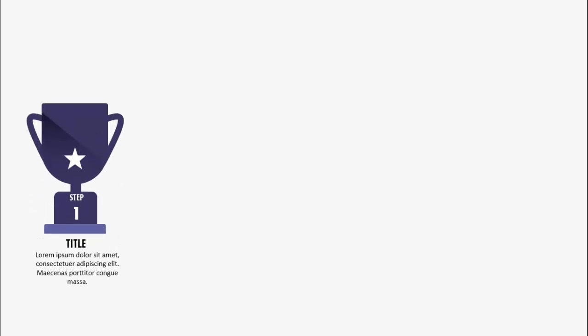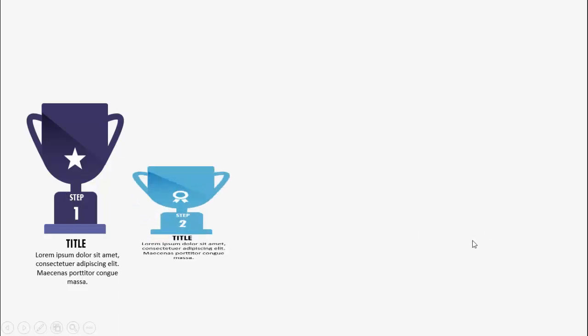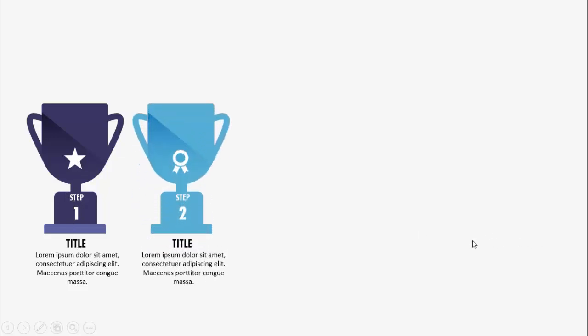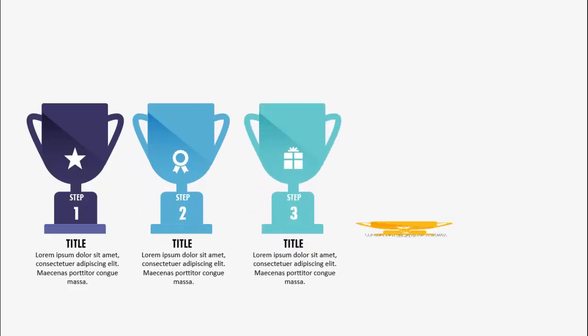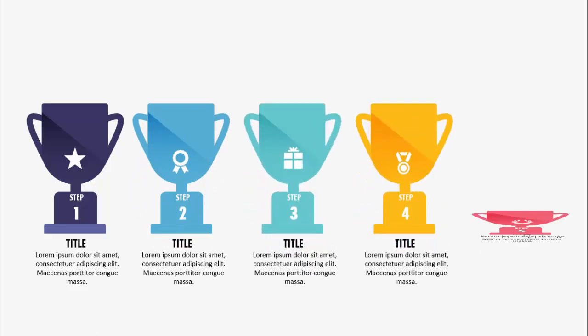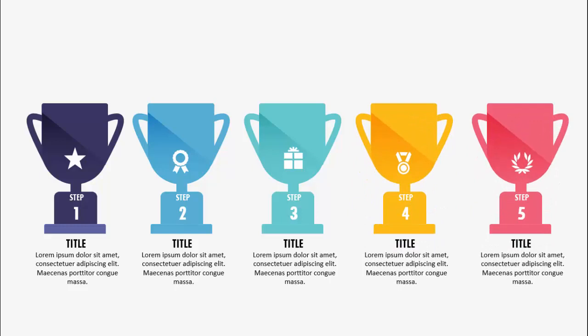In today's tutorial I'm going to show you how to create five trophy infographic options on a slide in PowerPoint. When I click, you can see I have created one trophy where I've added the icon, step one, the title, and the detailed text. When I click it will show different color combinations for options two, three, four, and five, so depending on your requirement you can increase or decrease these options.